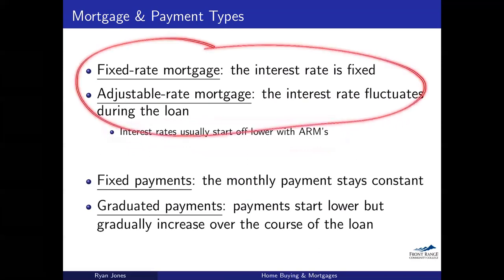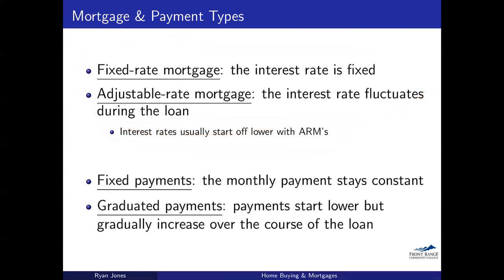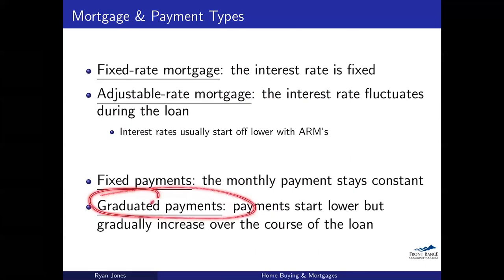So that covers interest rates — you can choose fixed or fluctuating. The other thing you can choose is your payment type. You can do fixed payments, where your monthly payment stays constant the entire lifetime of the loan. There you have the peace of mind of knowing exactly how much you have to pay, no matter what happens to the economy or your paychecks. You can also do graduated payments, where your payments start off lower and then gradually increase over the course of the loan.